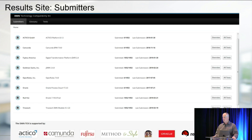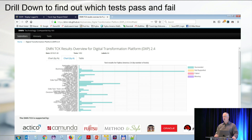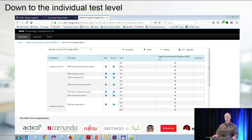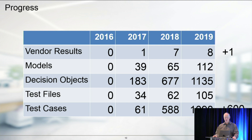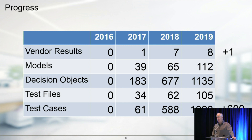This is the site. We have eight participating vendors at this point in time. You can drill down on each given vendor, look at each of the different categories of tests, see how many passed or failed, and drill down to the individual test level and see what the test is about. You can get the explanatory document and look at the actual source of the model and source of the test. The current status: three years ago we started, and today we have 112 models, over a thousand decisions, about 105 test files, and more than a thousand test cases.